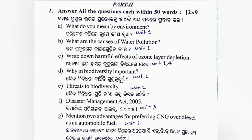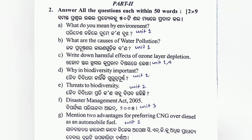Part 1 or Part 2 questions include: What do you mean by environment? The harmful effects of ozone layer depletion include climate change. Why is biodiversity important? Topics include biodiversity factors, threats to biodiversity — Unit 2. The Disaster Management Act 2005 — Unit 3. Two advantages of preferring CNG over diesel.